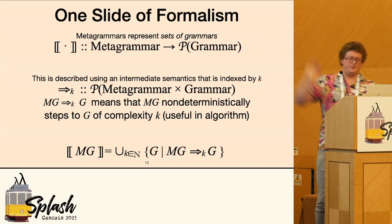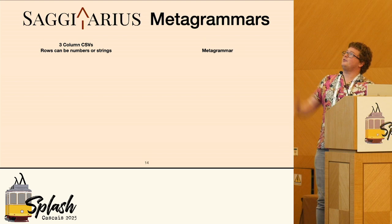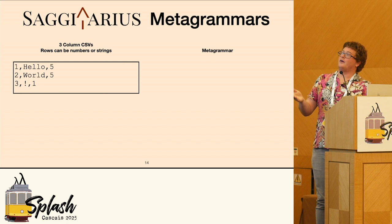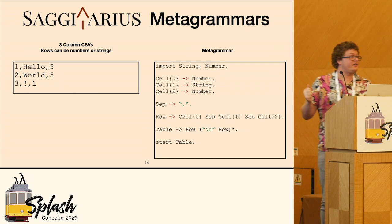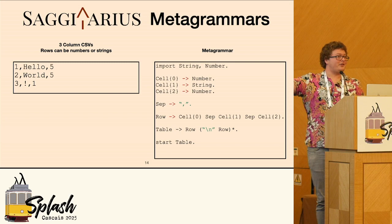So for Sagittarius metagrammers, we're going to start with the problem of figuring out three-column CSVs where the rows can be just numbers or strings — something kind of simple. Let's come up with a metagrammer for it. One of our design decisions for Sagittarius is that we look like grammars. So actually, this grammar that I've written is indeed also a metagrammer.